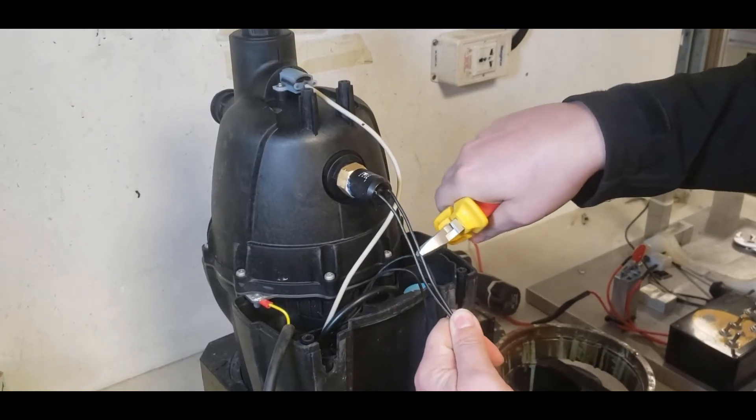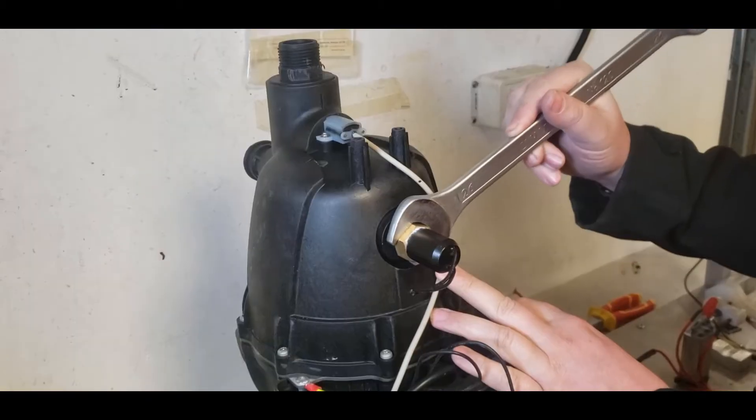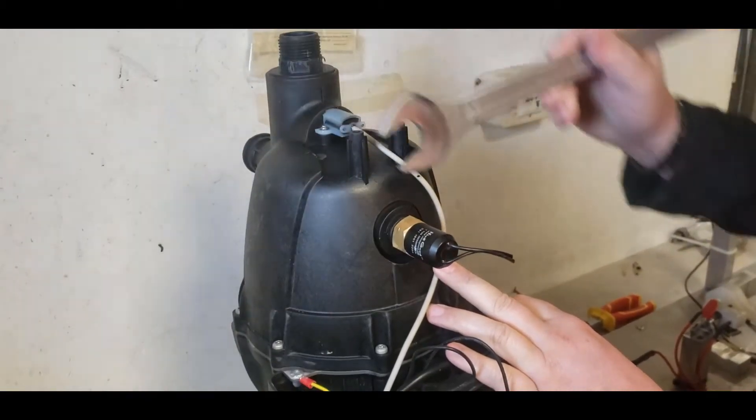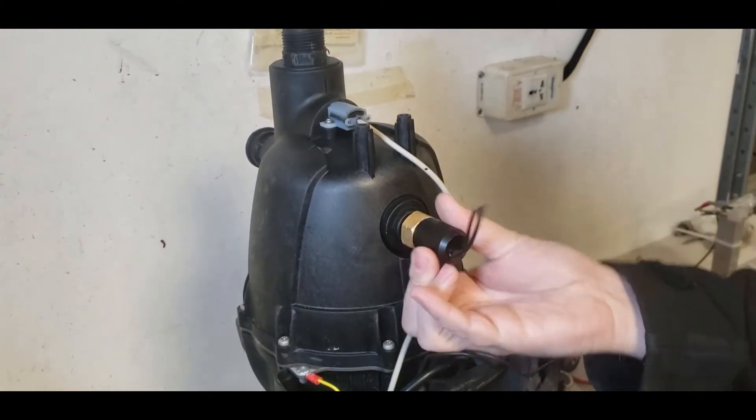Cut the wires of the old pressure switch leaving only five to ten centimeters of wire left near the pressure switch. Remove the old pressure switch and throw it away.